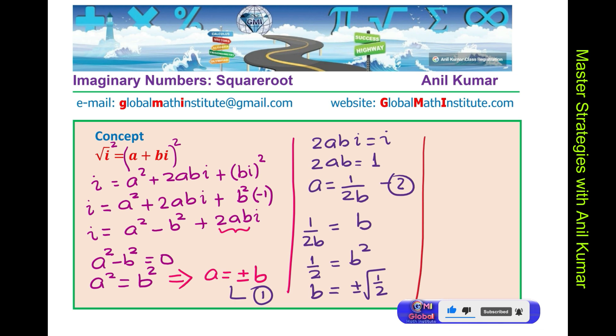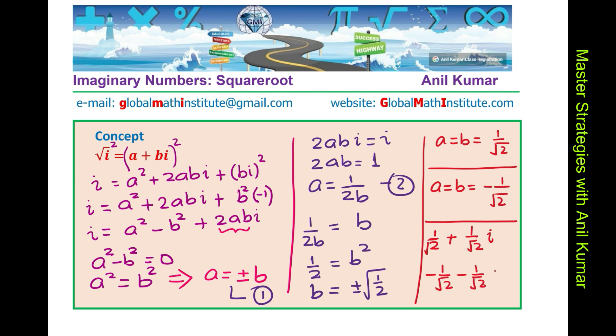So, in fact, we get two solutions for this particular question. The very first one is a equals to b equals to 1 over square root 2 that is when we take a positive value. The second one is a equals to b equals to minus 1 over square root 2. And therefore, we have two solutions. One solution a plus bi will be 1 over square root 2 plus 1 over square root 2 i and the other will be minus 1 over square root 2 minus 1 over square root 2 i. Do you see that?